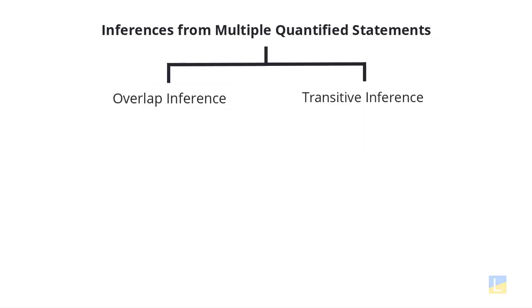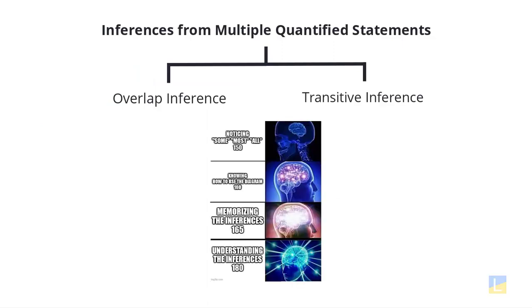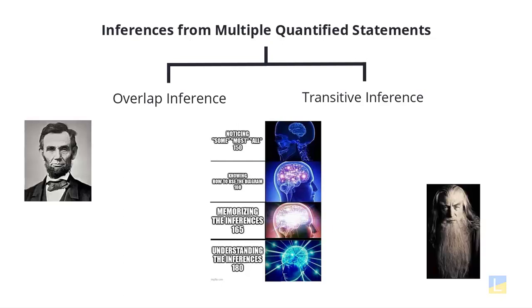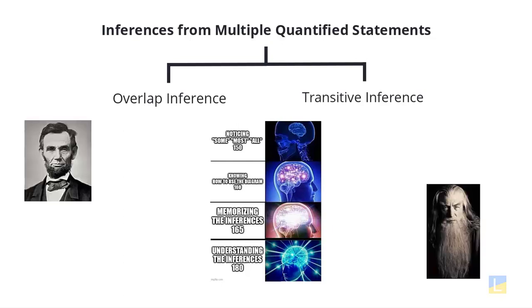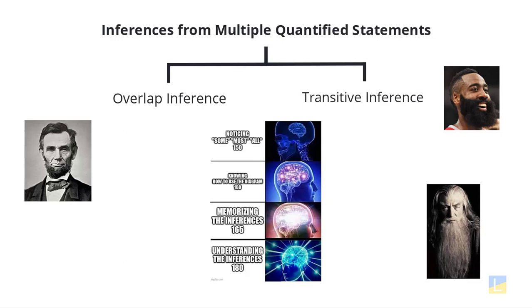That's it for part one of this lesson. Stay tuned for part two, where we'll talk about the transitive type of inference from multiple quantified statements. We'll also cover the reversibility of a some statement and how that's important for making these inferences, and finish with some big-picture pointers for dealing with quantified statements in logical reasoning stimuli.